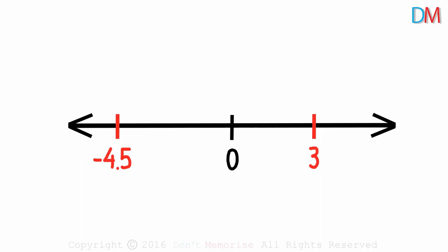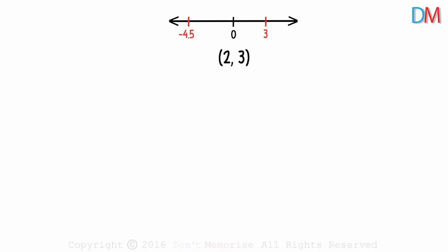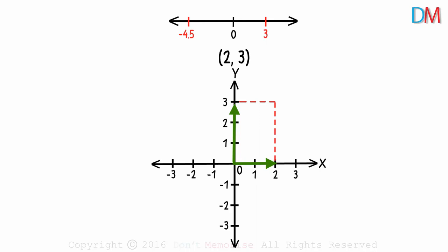But what if we have an ordered pair of real numbers? Something like 2 comma 3? How can we represent this on an x-y plane? Two units on the x-axis and three units on the y-axis gives us the point 2 comma 3. This point P had an x-component and a y-component.